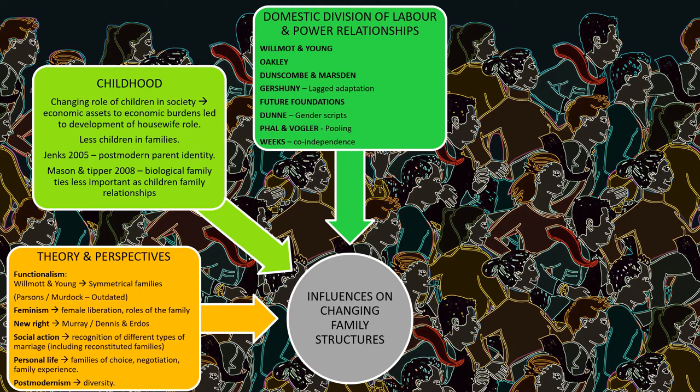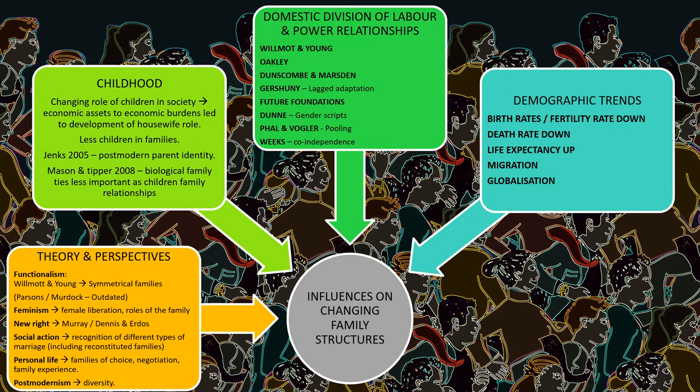Dunne talks about gender scripts, which changes the structure in the sense of families of choice - same-sex relationships that may remain childless. Weeks discusses financial co-independence, and women returning to work could be linked to the changing significance of children within the family structure.